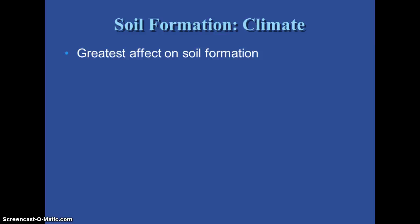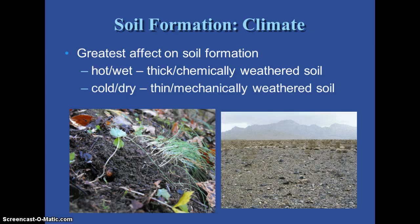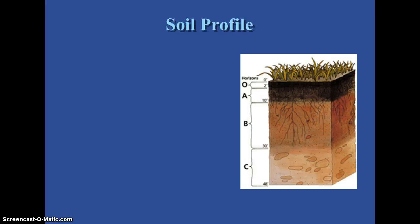Probably the biggest factor in soil formation is climate. If you have a hot, wet climate, you're going to have more chemically weathered soils because you'll have more of those dissolving acids — carbon dioxide and water vapor form carbonic acid, and sulfur and water vapor form sulfuric acid. If you have a cold, dry climate, you're going to have more mechanically weathered soils, and that takes a lot longer because the rocks are just breaking down with nothing speeding that up. Cold, dry climates tend to have much thinner soils — like our deserts and tundras — compared to our deciduous forests or rain forests that tend to have hot, wet climates.